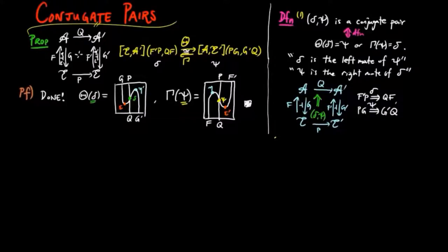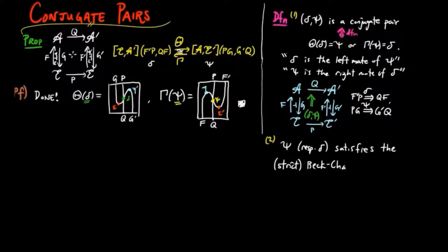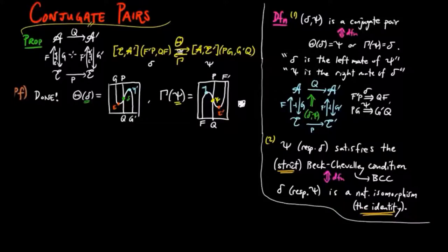Then if delta psi is a conjugate pair, we say that psi, respectively delta, satisfies the Beck-Chevalley condition if and only if delta, respectively psi, is a natural isomorphism. And we say that psi, respectively delta, satisfies the strict Beck-Chevalley condition if and only if delta, respectively psi, is the identity natural transformation, or in other words, that the diagram involved commutes. As shorthand we write BCC for Beck-Chevalley condition.